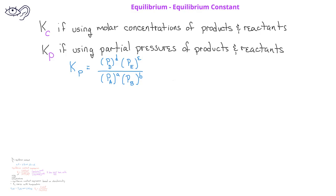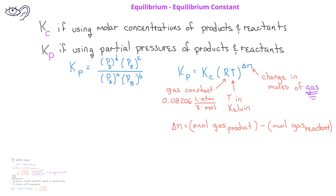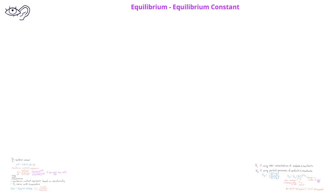This relationship is given by the equation K sub P equals K sub C multiplied by RT raised to the power of delta N, where delta N is the change in the number of moles of gas in the equation. The change in moles of gas is found by taking the moles of gas of the products and subtracting the moles of gas of the reactants.